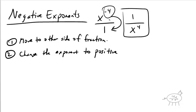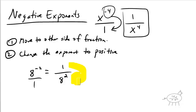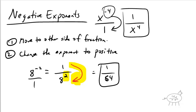Notice this was on top and I moved it to the bottom. Now, if I give you 8 to the negative 2 power — first, make it a fraction and move it to the other side, so it's 1 over 8. Then make the exponent positive: 1 over 8 squared. 8 squared is 64, so the answer is 1 over 64.